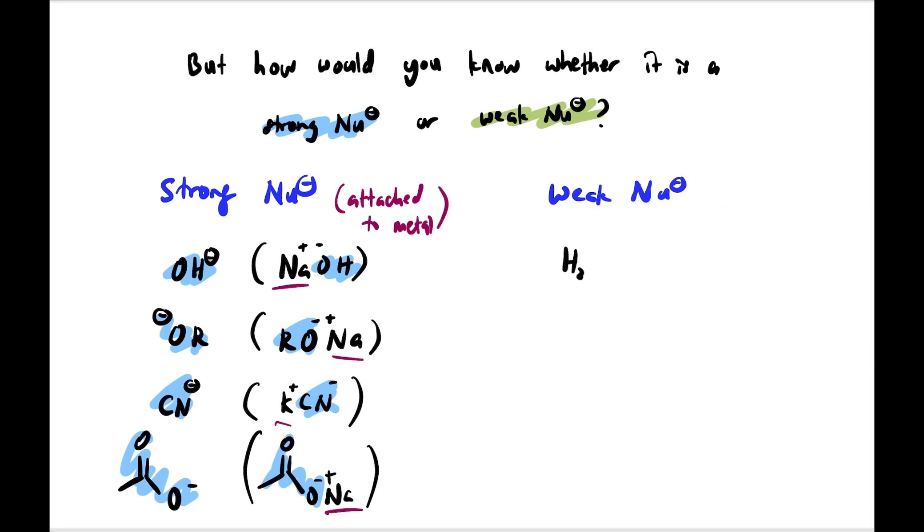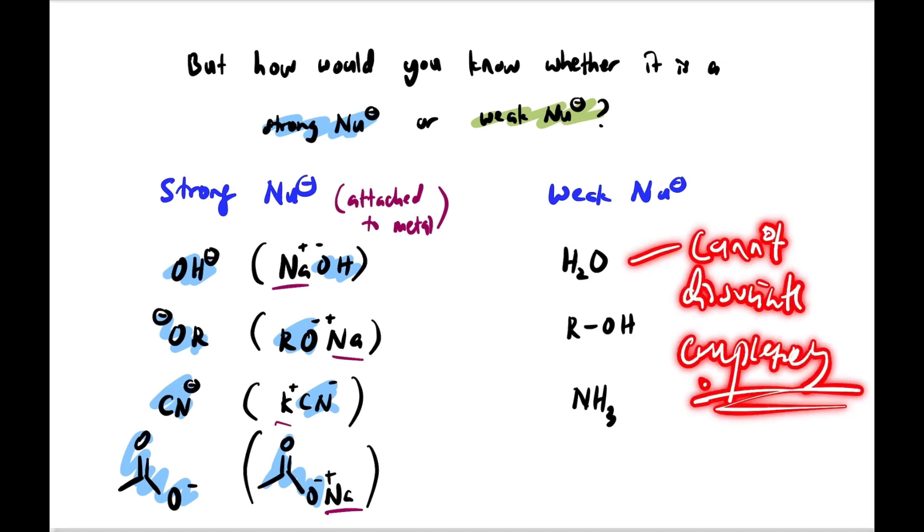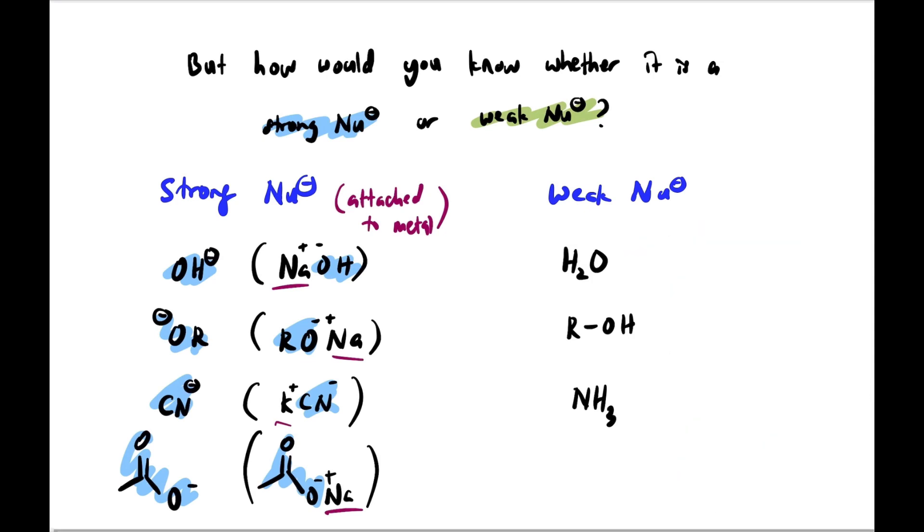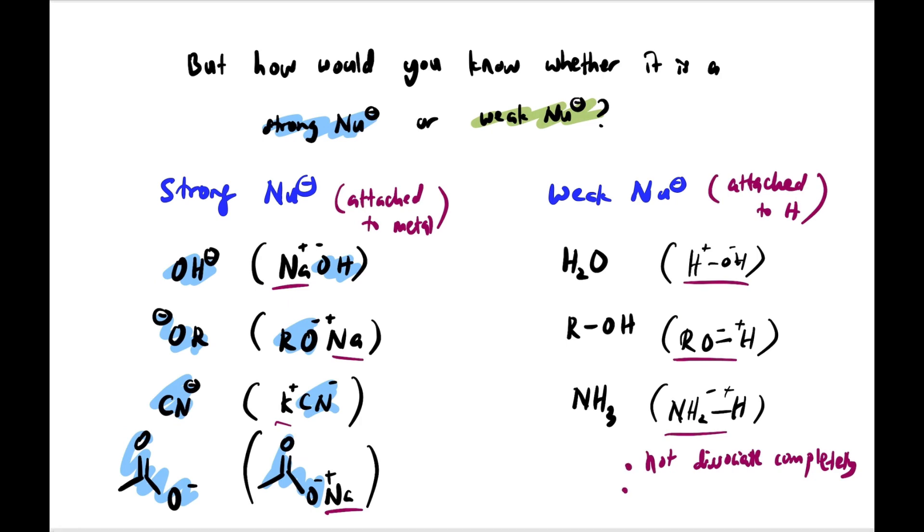Our examples of weak nucleophiles are H2O, ROH, and NH3. All three of these cannot dissociate completely from the H attached to them. For example, OH minus rarely occurs from H2O. Because all of these are attached with H, they do not dissociate completely, unstable. So they prefer to stay like that as nucleophiles, which are actually weak nucleophiles, because they don't have a complete negative charge. They only have lone pairs.